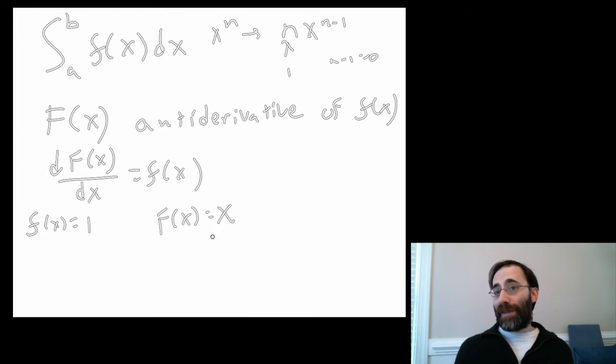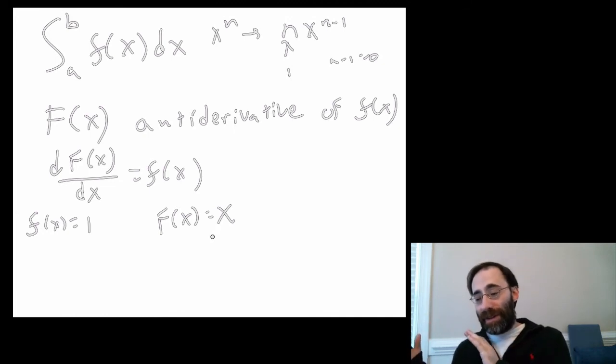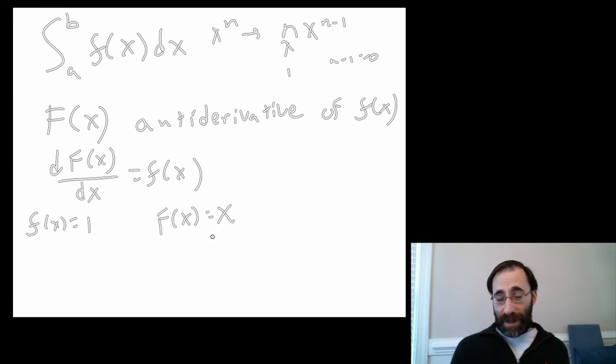Well, remember the derivative of a constant is 0, by that same power rule. So the derivative of x plus 10 is 1 plus 0, because the derivative is linear. So it has the same exact derivative, so x plus 10 will work as well, as would x minus 100, or x plus 1 million, or whatever.